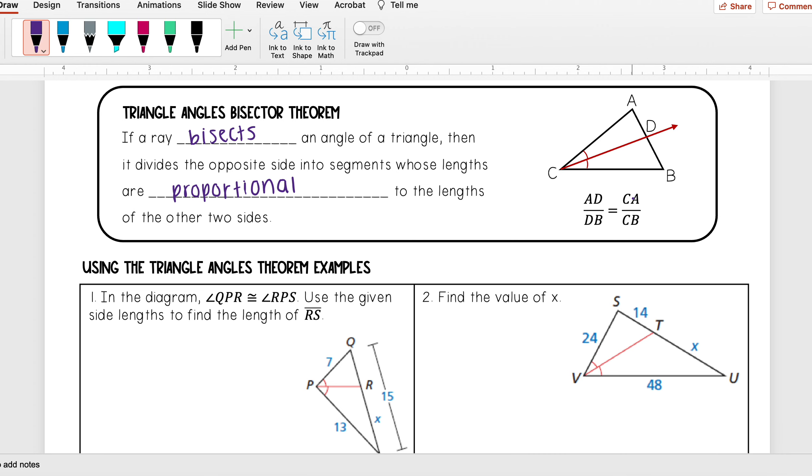So the important thing to note here is making sure that you have the correct segment in the correct spot for your proportion. You'll notice that AD and CA, they are both coming from this left triangle, and those are going to be the ones that are on top.